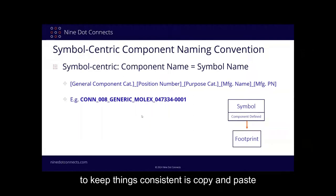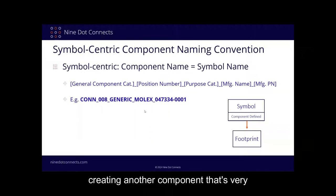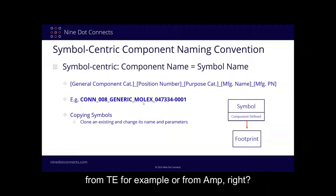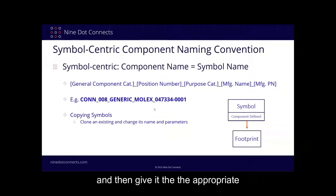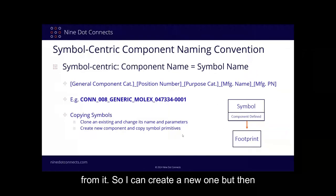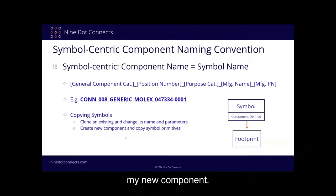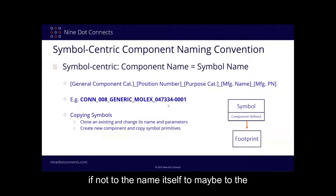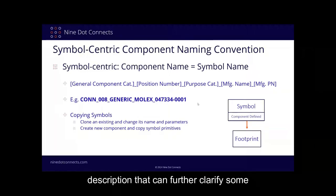The name of the game is copy and paste for consistency. If I have a component and I'm creating another that's very similar, I can clone the existing one and change its name and parameters — because the symbol graphic is going to look the same. Alternatively, I can create a brand new component and then copy the primitives from the existing one. For those using symbol centric libraries, don't drop off now — take a look at what we're doing here because there may be things you want to add to the name or description to clarify further.